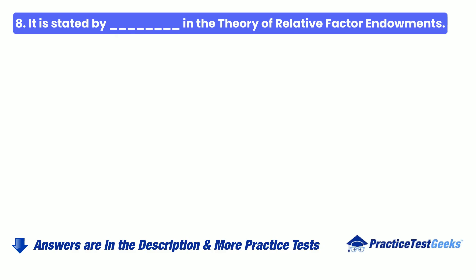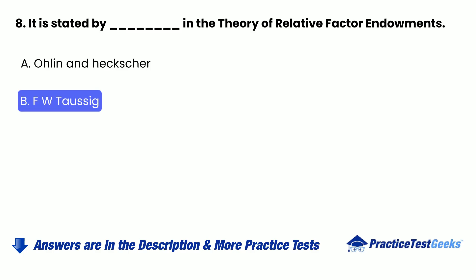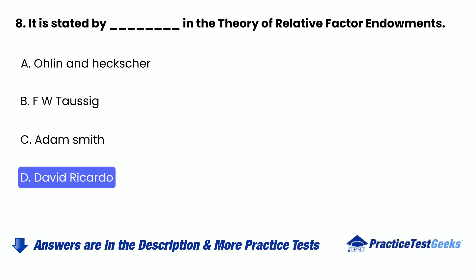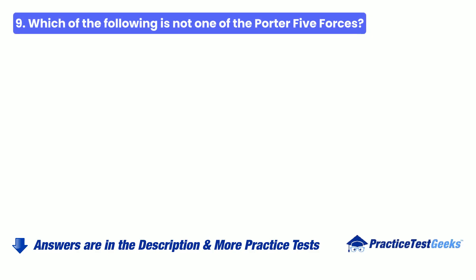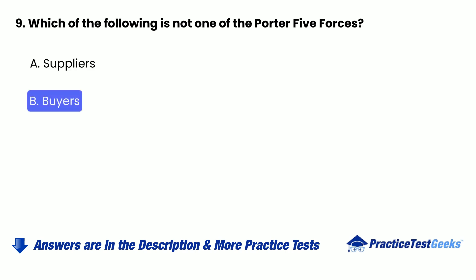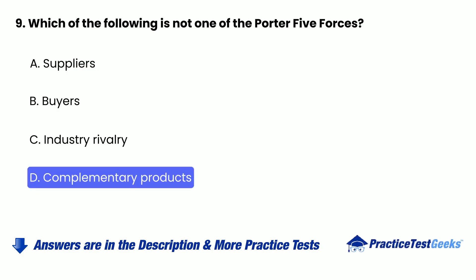Question 8: It is stated by blank in the Theory of Relative Factor Endowments. Question 9: Which of the following is not one of the Porter Five Forces? A. Suppliers, B. Buyers, C. Industry Rivalry, D. Complementary Products.